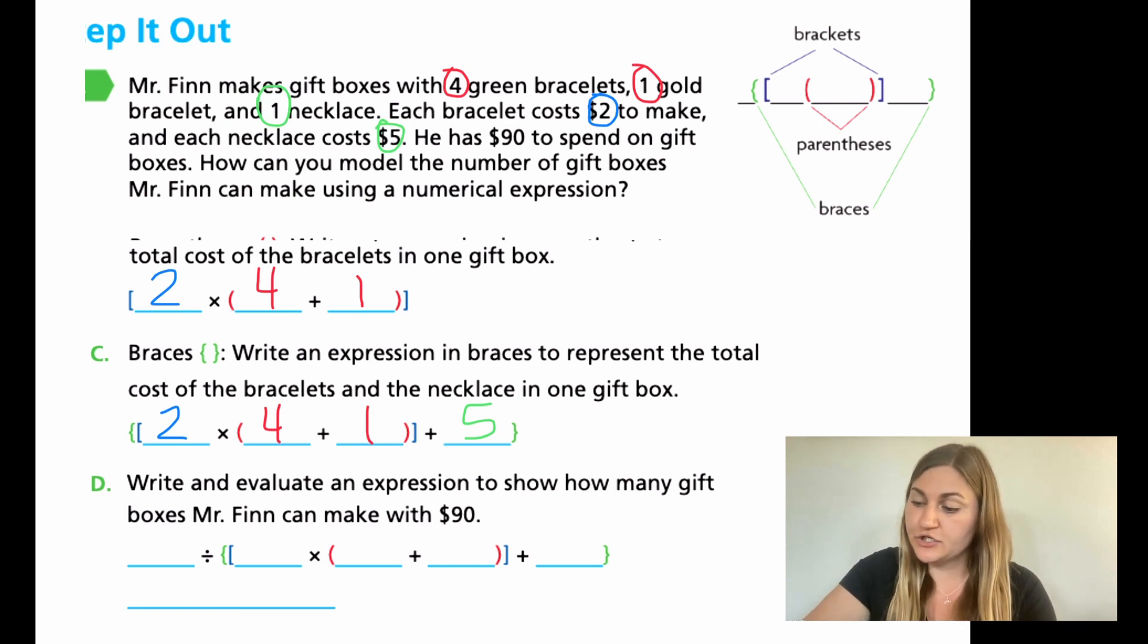Now moving down to D, write and evaluate an expression to show how many gift boxes Mr. Finn can make with the $90. What I'm going to do is I'm going to bring down all my work and then add the next step. Remember I had my 2 here, my 4 and my 1, and then my 5. So remember that 2 was the $2 for the four green bracelets, the one gold bracelet, and the 5 is the amount for that one necklace. Now if I figured out that total cost for everything, how many boxes can I make if he had his $90 to spend? So I'm going to take that all, I'm going to find the total, and then I'm going to take the 90 and I'm going to divide it.